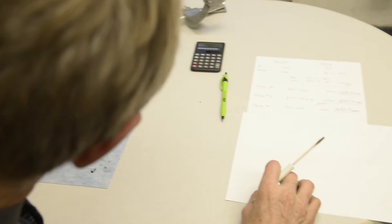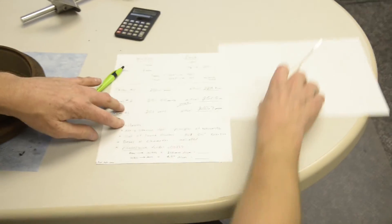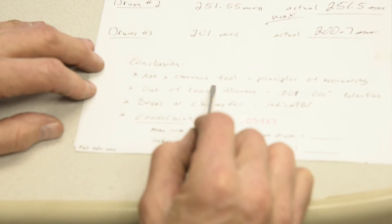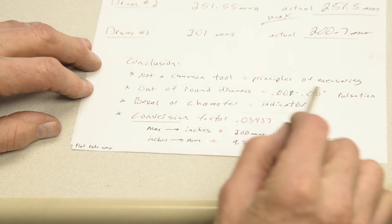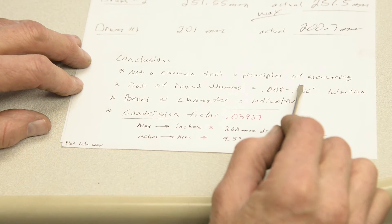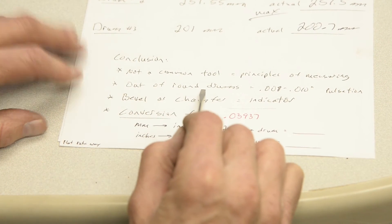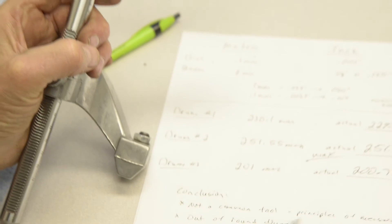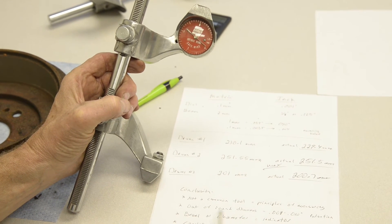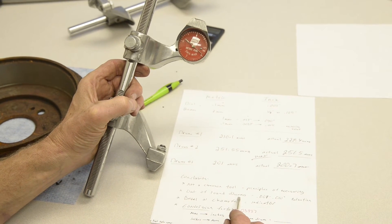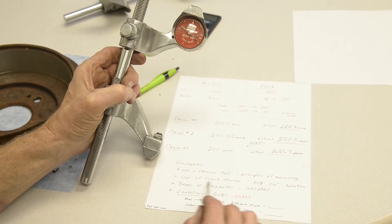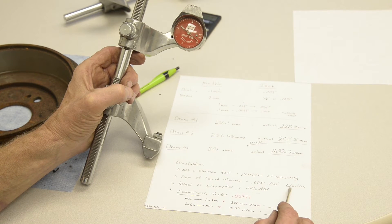Some conclusions. Granted, the drum micrometer is really not a common tool, but the principles and understanding the measuring of a drum is what I was really after today. Out of round drums. I'm going to show this - the micrometer is still set up for my 200 millimeter drum. In the past we've been taught that somewhere around 8 to 10 thousandths of an inch of a drum being out of round might be enough to cause a brake pedal pulsation.